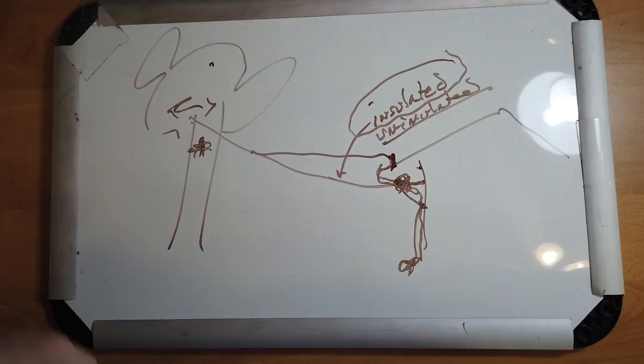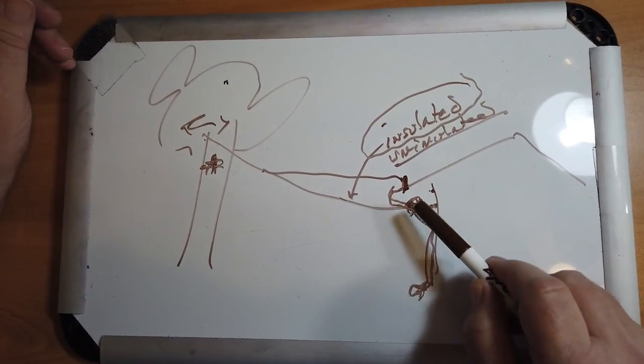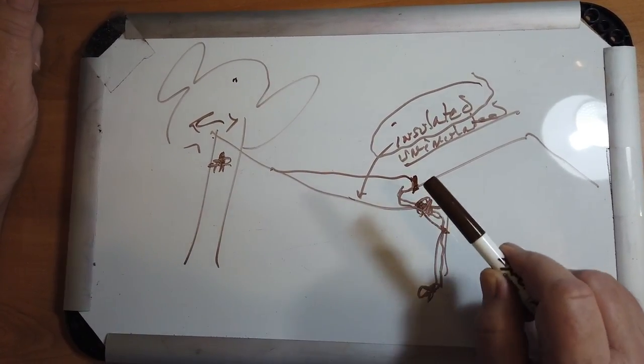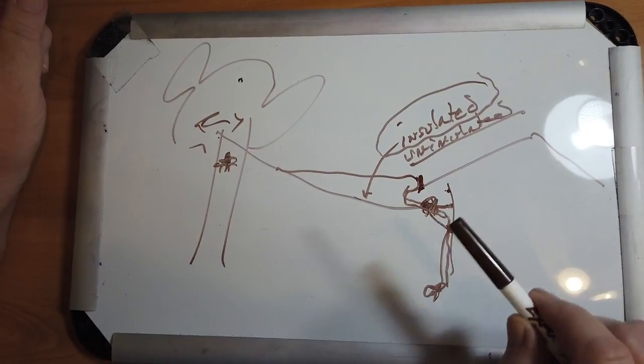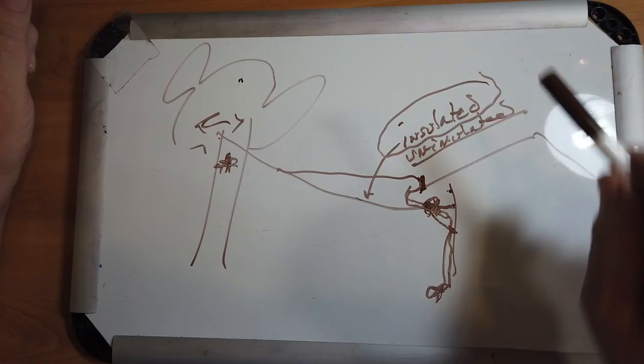So those are some thoughts for you. Get that wire away from the downspout. Again, a simple way is to just attach a string to it to another part of the eaves and pull it away a little bit so that it stays away from it and you'll have fewer problems. So there you have it. I hope that helps. And Pat, good luck with your antenna and getting on HF.